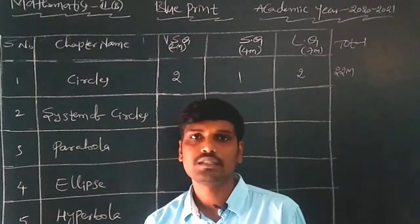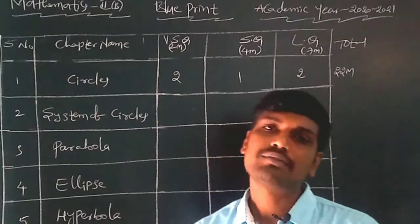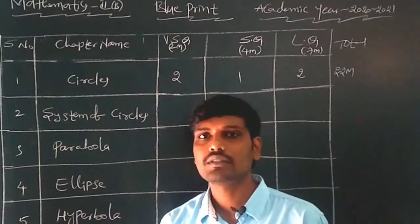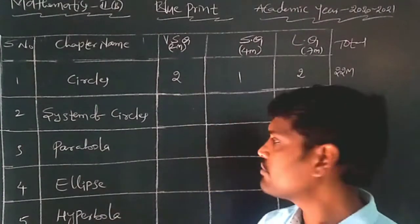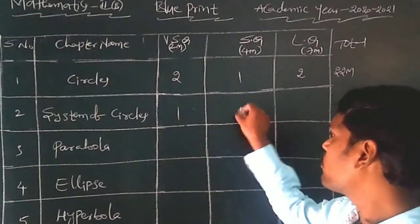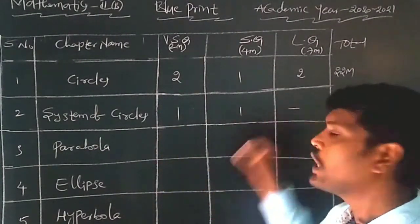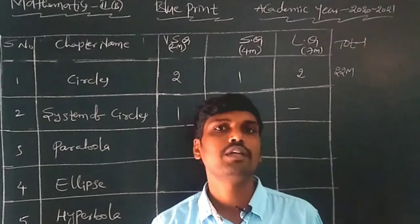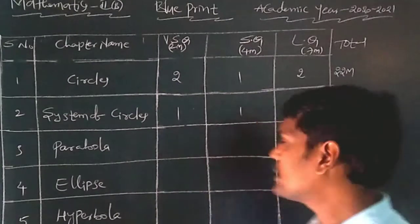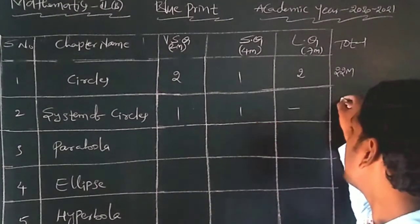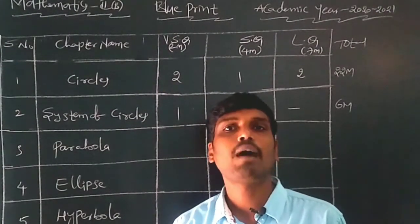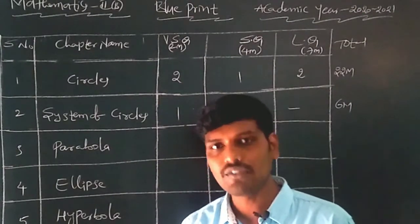The second chapter is System of Circles. In this chapter, coming to the IP examination: one 2-mark question and one 4-mark question — no 7-mark question. Total: 2+4 = 6 marks coming to the IP examination from the System of Circles chapter.